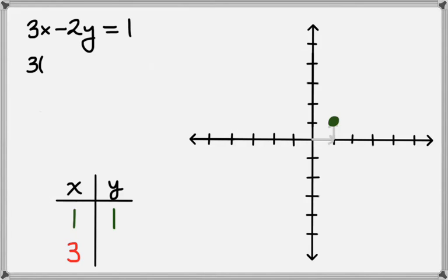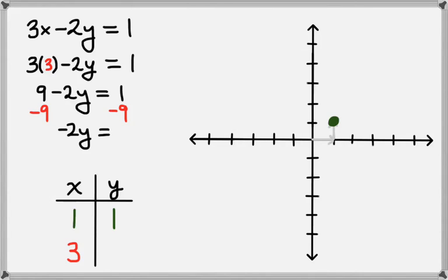We'll plug this point into our equation, so we have 3 times 3 minus 2y equals 1. This leaves us with 9 minus 2y equals 1. Now we want to solve for y again, so we'll subtract 9 from both sides. That will leave us with negative 2y equals 1 minus 9, which is negative 8.